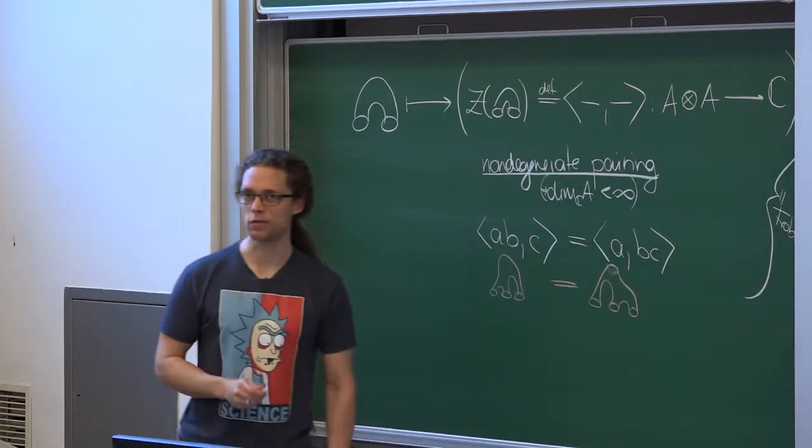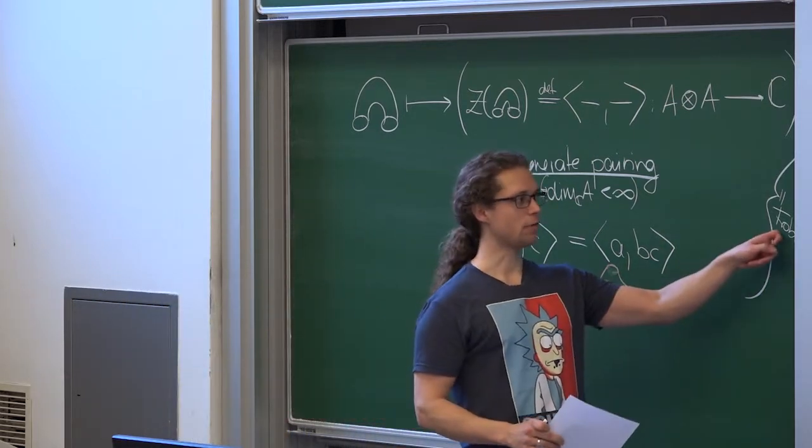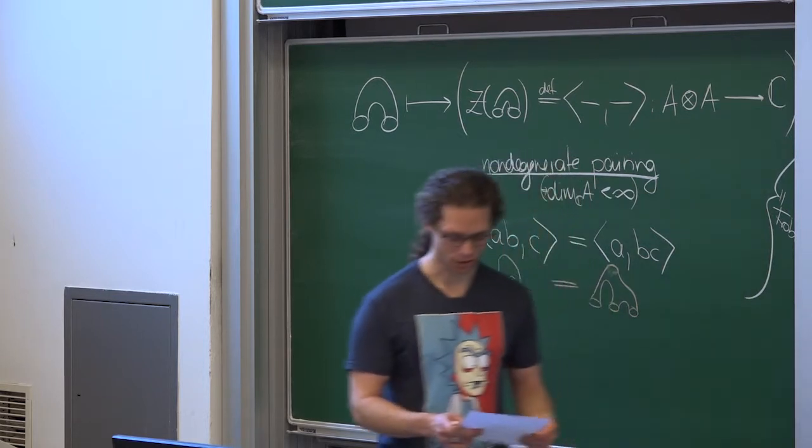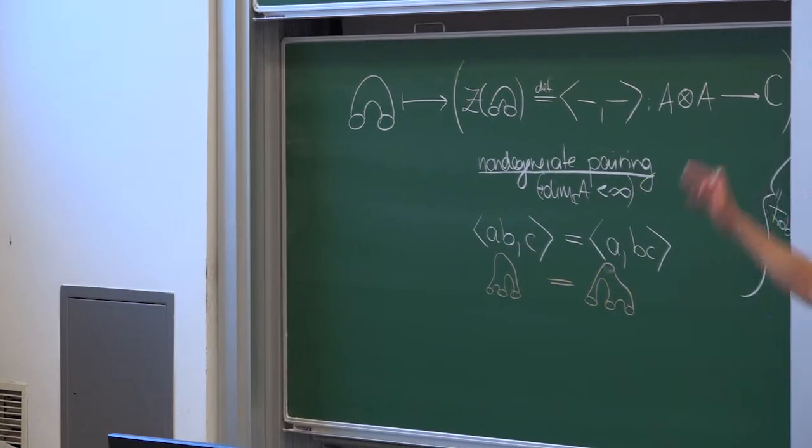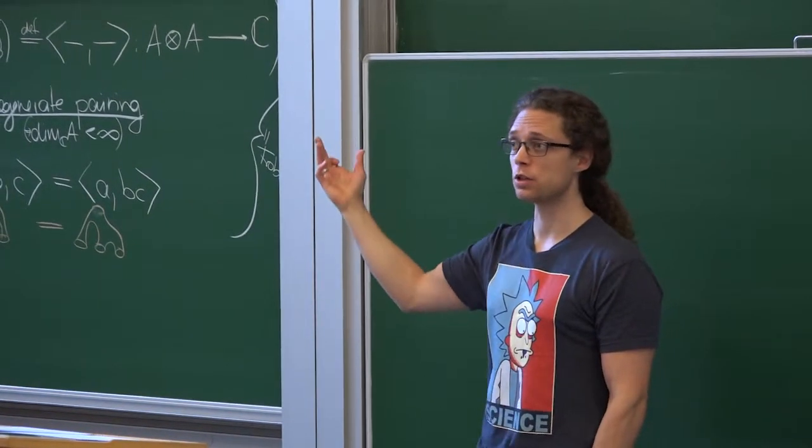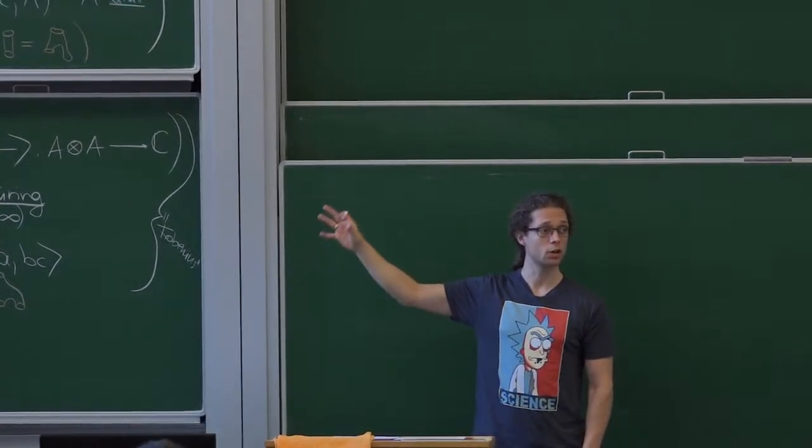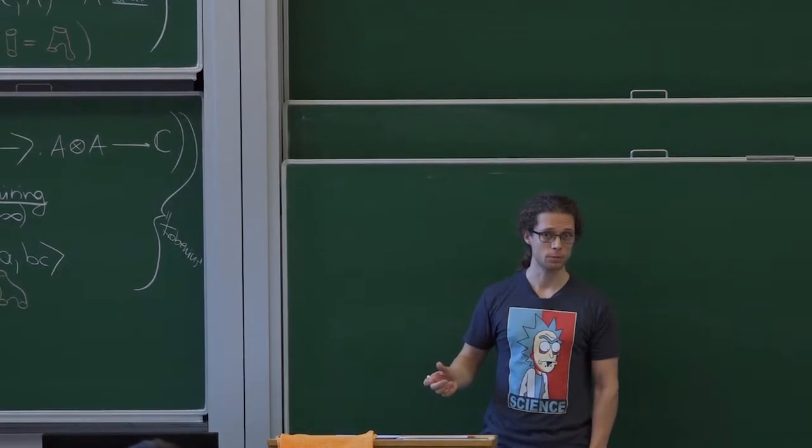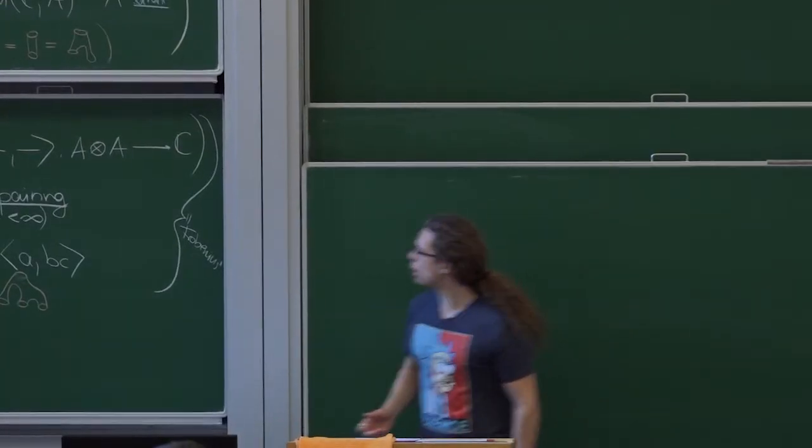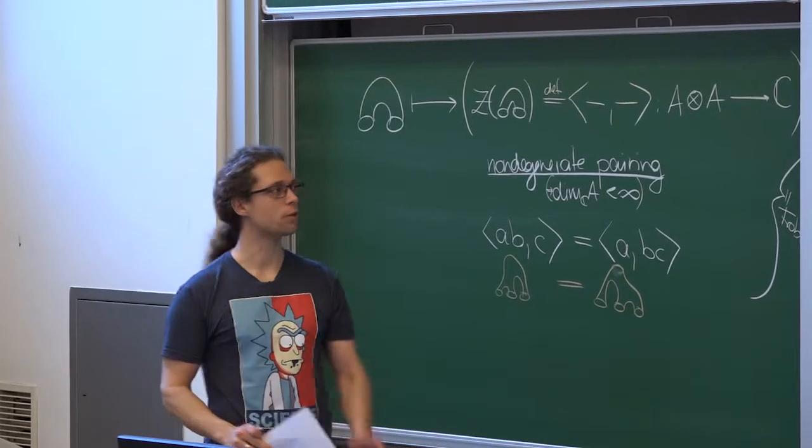I just realized maybe not everyone knows the name Frobenius, often called Frobenius. It's spelled F-R-O-B-E-N-I-U-S. So what we found now is that if we have a symmetric monoidal functor from bord 2 to Vect, hence a closed TQFT, then from this we can extract in precisely this manner a commutative Frobenius algebra.